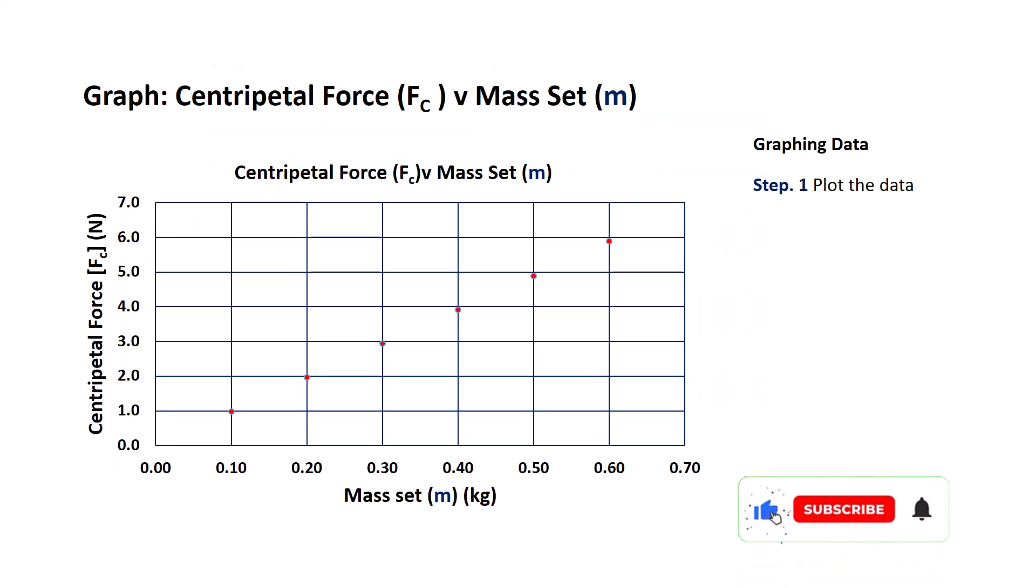I've generated here a graph showing centripetal force on the vertical axis, that's our dependent variable, and the mass set on the horizontal axis, that's our independent variable. Step number one is to plot the data. Step number two is add a trend line as can be seen here in red. Step number three is to use Excel and add a linear equation.